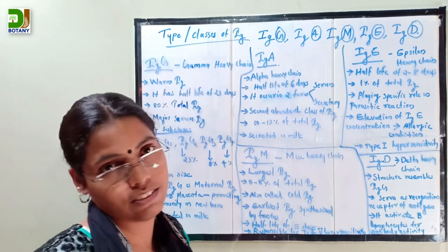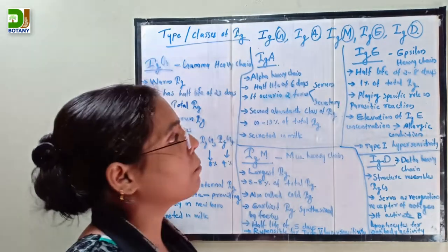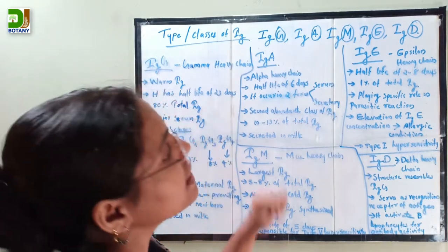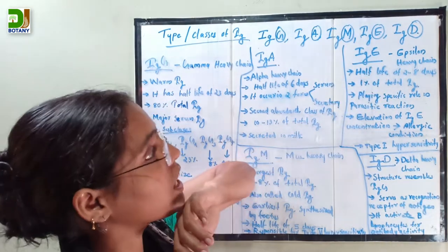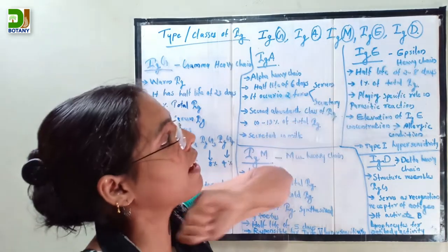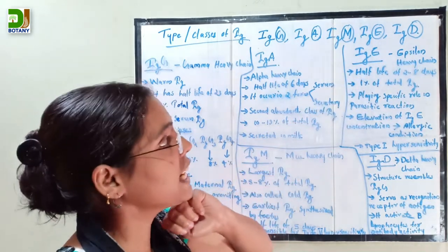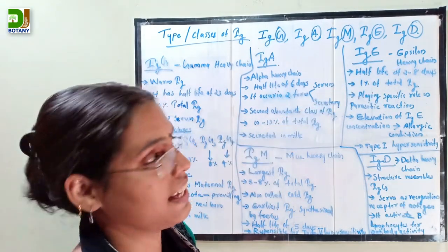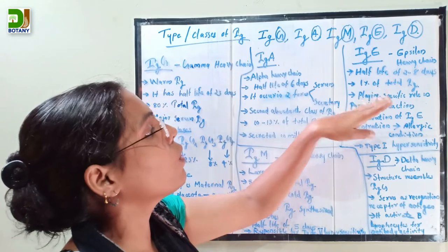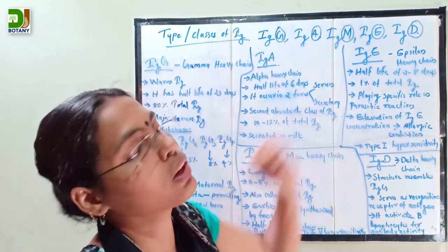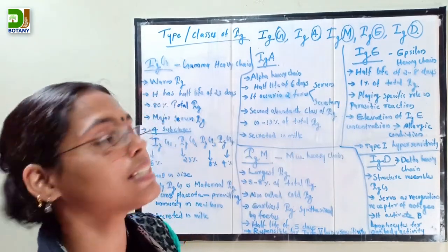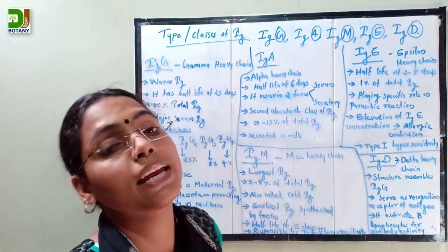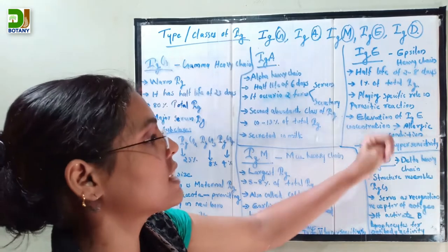The fourth type is immunoglobulin E. Immunoglobulin E contains epsilon heavy chains. The half-life of immunoglobulin E is two to eight days, and only 1% of total immunoglobulin is immunoglobulin E. It plays a specific role in parasitic reactions.